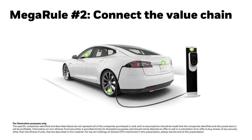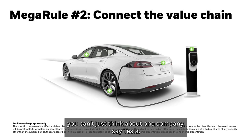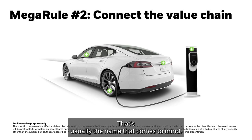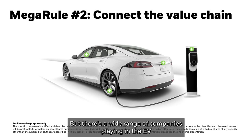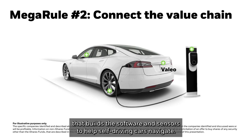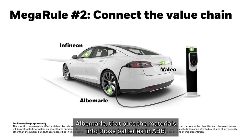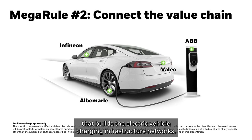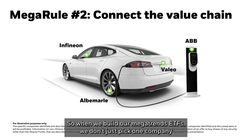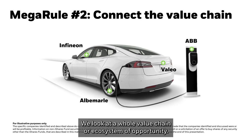That takes us to Mega Rule 2: connect the value chain. If you want to invest in a climate change theme like electric vehicles, you can't just think about one company like Tesla. There's a wide range of companies in the EV and AV spaces — not just car companies. Think about Vallejo, which builds software and sensors for self-driving navigation; Infineon, which puts the batteries in EVs; Albemarle, which puts the materials into those batteries; and ABB, which builds EV charging infrastructure networks. When we build megatrend ETFs, we look at a whole value chain or ecosystem of opportunity.